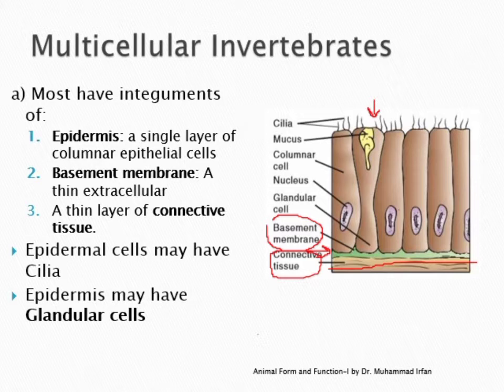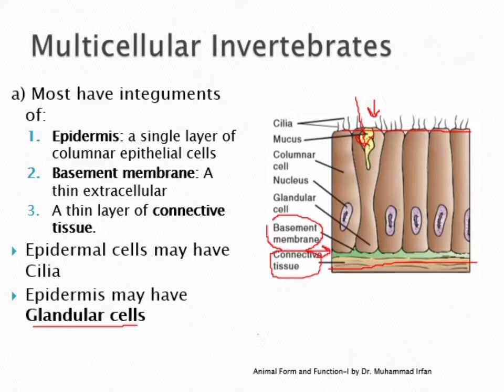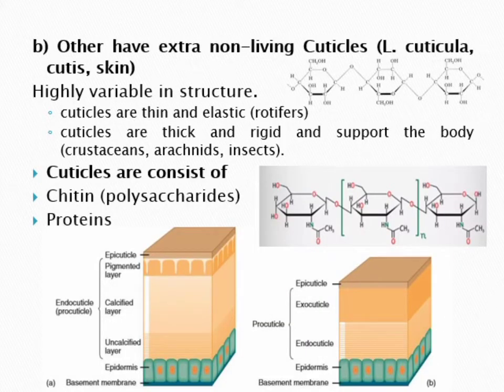Epidermal cells may also have glandular cells. Epithelial tissue provides almost all glands — whether endocrine or exocrine glands — with the exception of a few from connective tissue or nervous tissue. As established, multicellular organisms may have an integument of three layers: epidermis, basement membrane, and connective tissue.